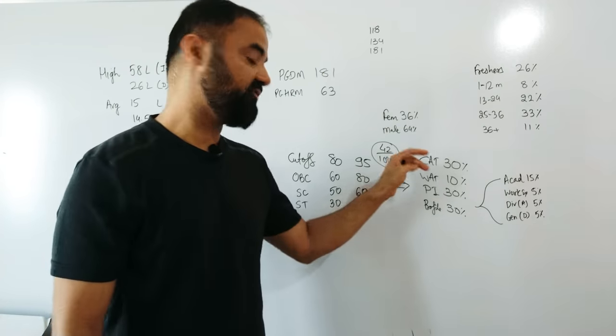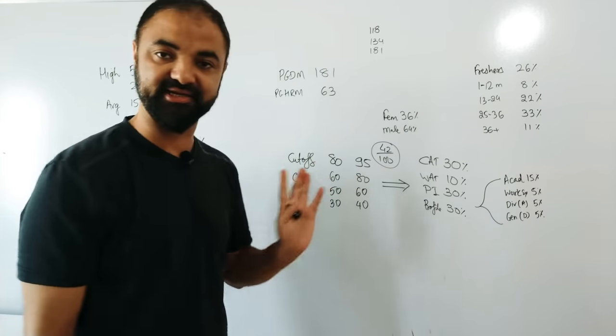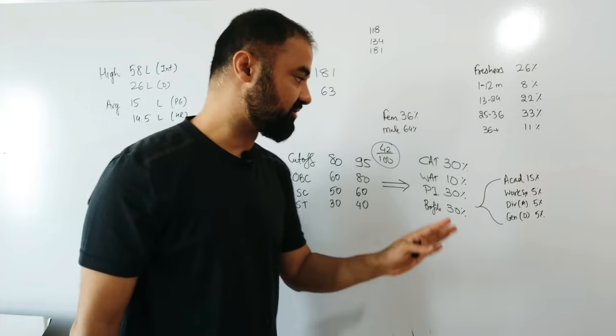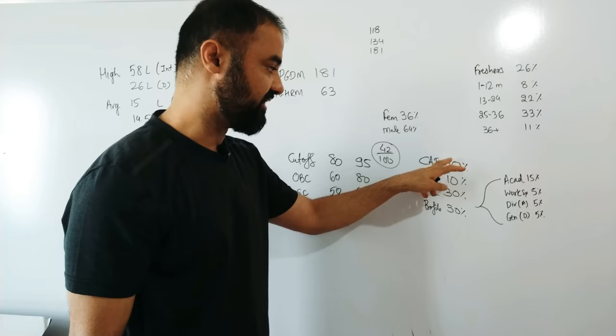Whatever you scored in 10th - 60, 70, 80, 85 - take half of that. Suppose you scored 85, if you get 42 marks in CAT paper, you are getting the call from new IIMs, provided you get 80, 80, 80 sectional. Once you get the call, they will conduct the interview.